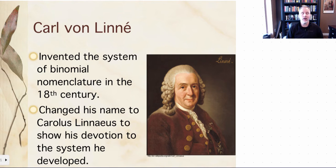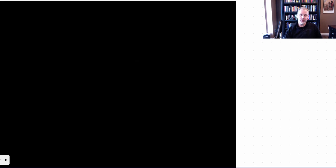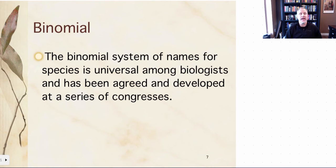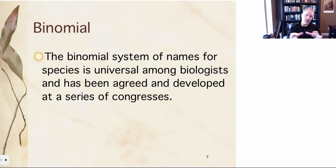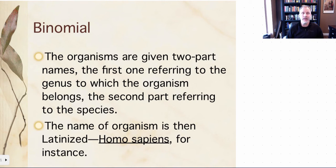Carl von Linné invented the system of binomial nomenclature — this two-part naming system — in the 18th century. He was so devoted to it that he changed his name to Carolus Linnaeus, essentially Latinizing it. What we now refer to simply as the binomial system is used universally among biologists, agreed upon through a series of international Congresses. Organisms are given a two-part name: the first part referring to the genus, and the second belonging to the species.